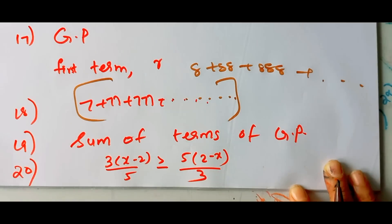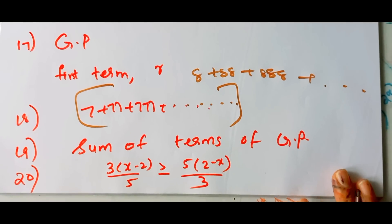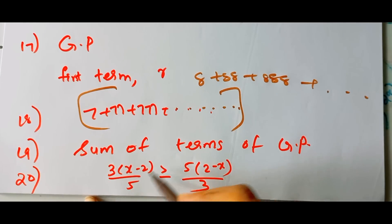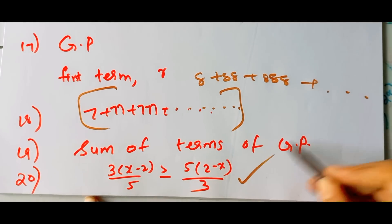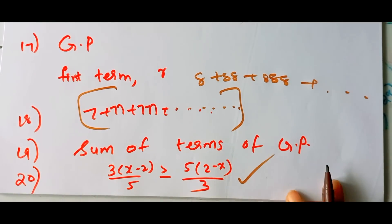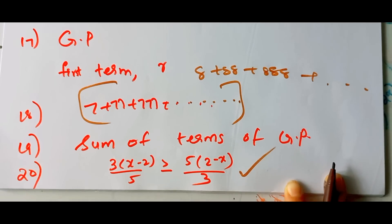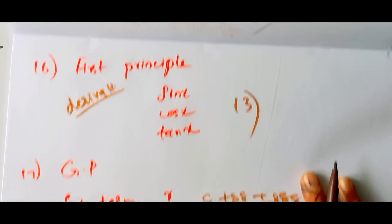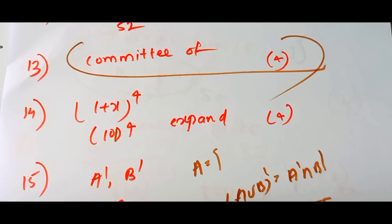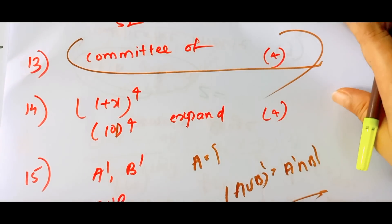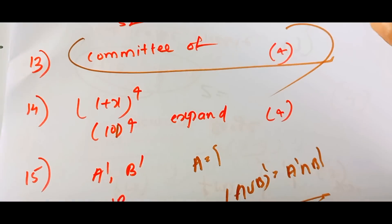If you look at linear inequality, this is solving the value of x — 9 and 3 marks. If you look at the type of questions in the paper, all the types of questions come in the paper.